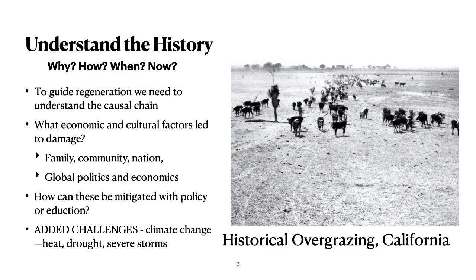To understand the history of a site, we'd like to know why things happened, how they happened, when, and what the current conditions are. To guide natural regeneration, we need to understand the causal chain of economic and cultural factors that led to the damage or destruction. These may be family issues, community issues, national issues, and often involve global politics and economics. The question is, how can these be mitigated with policy or education?